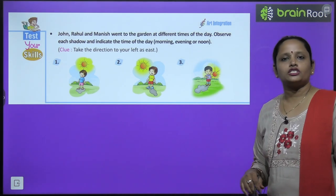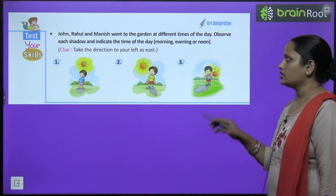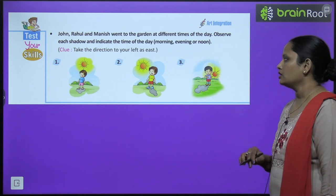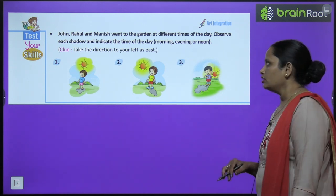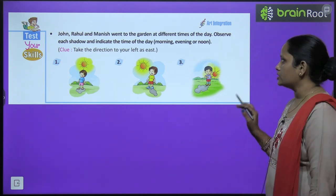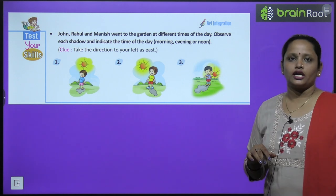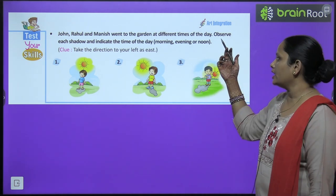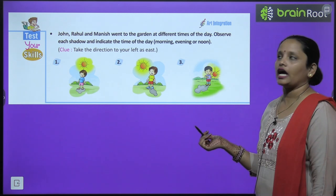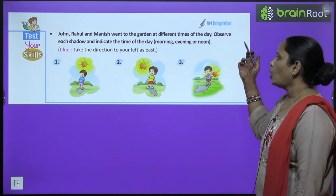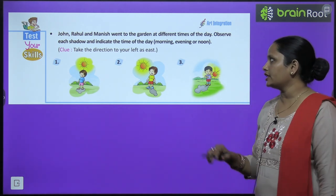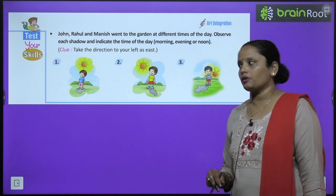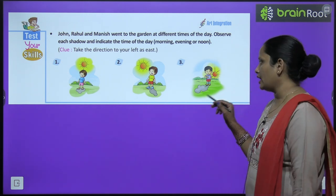Now here you have to test your skills, children. John, Rahul and Manish went to the garden at different times of the day. These three kids went to the park at different times. Observe each shadow and indicate the time of the day. Look at each shadow and tell at what time of day it was formed.